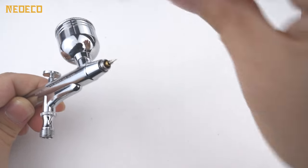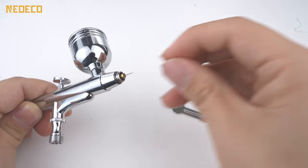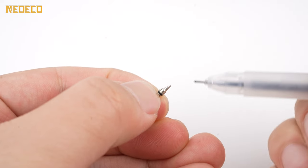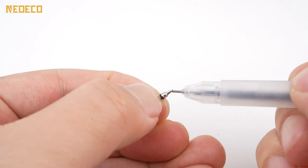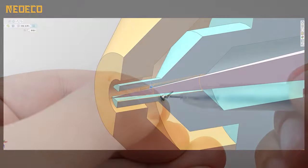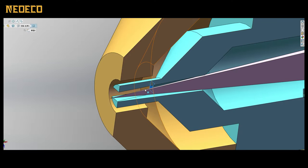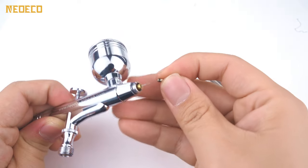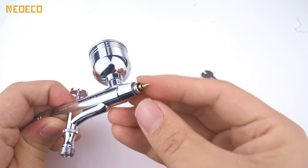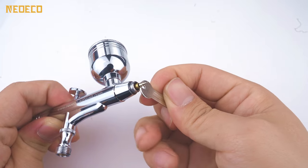Another critical factor that can lead to air leakage and a bubbling cup is a cracked nozzle tip. Due to its thin wall, the nozzle tip is more susceptible to breakage compared to other parts. If the nozzle tip is cracked or damaged, it can compromise both the air channels and the paint channels, resulting in air leaks. Therefore, it's imperative to ensure that your nozzle is in good condition to prevent such issues from occurring.